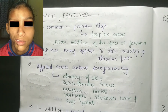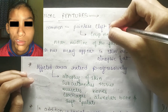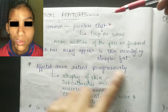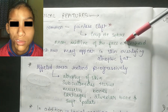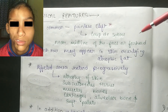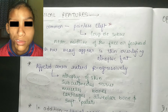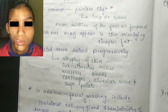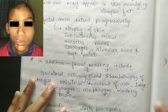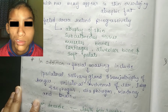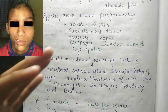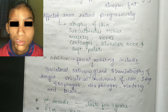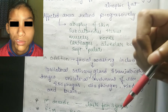Moving to the clinical features of facial hemiatrophy: most commonly it shows a painless cleft called coup de sabre near the midline of the face or forehead. A photo will be shown. A bluish color may also appear in the skin overlying the atrophic and affected area, and the condition extends progressively.